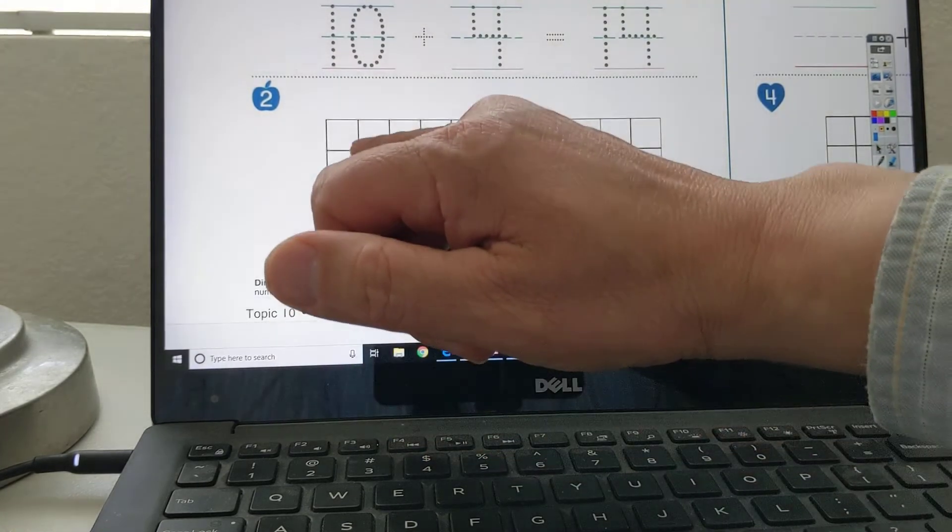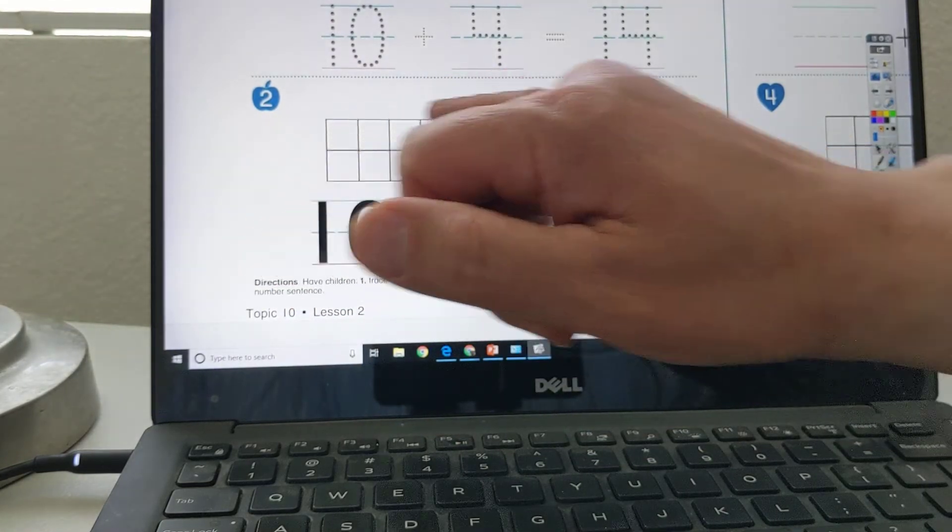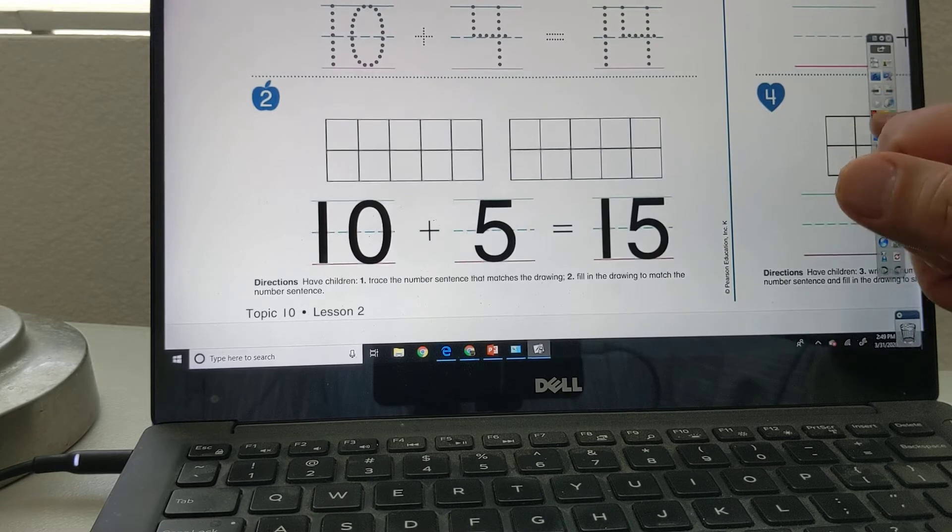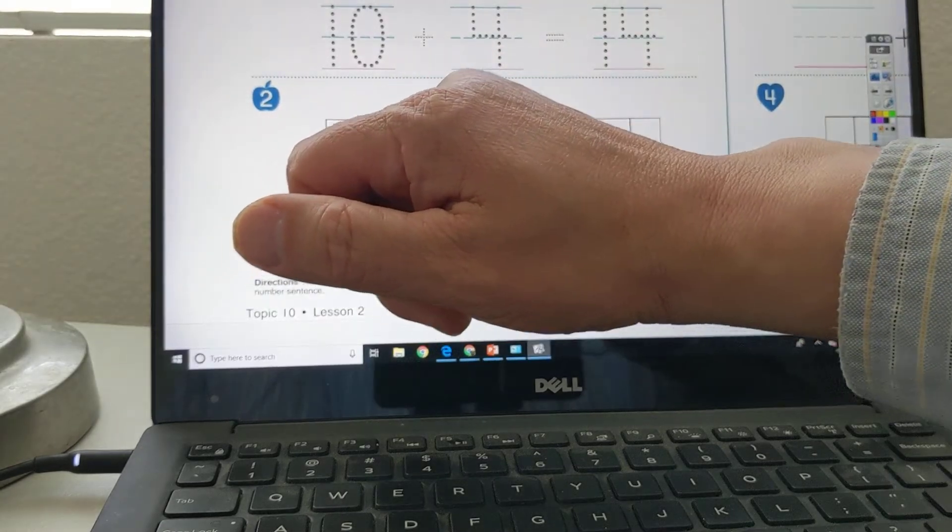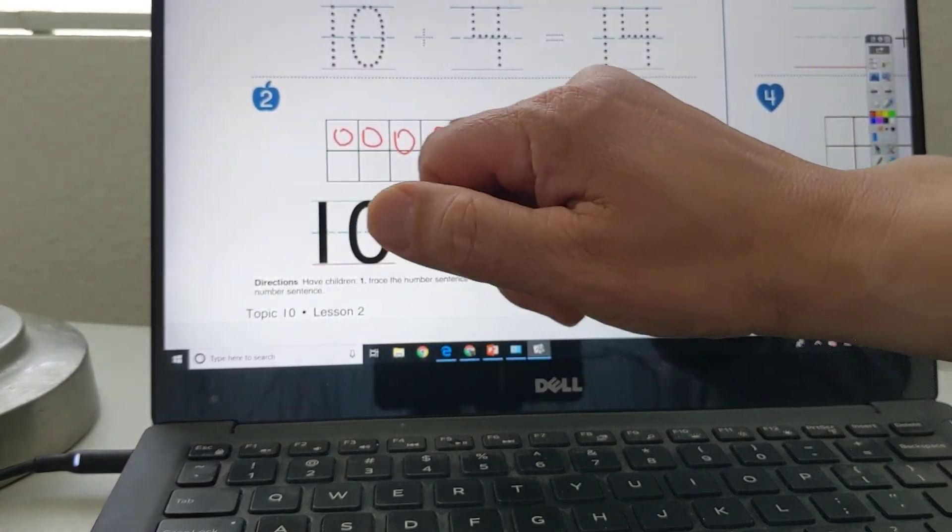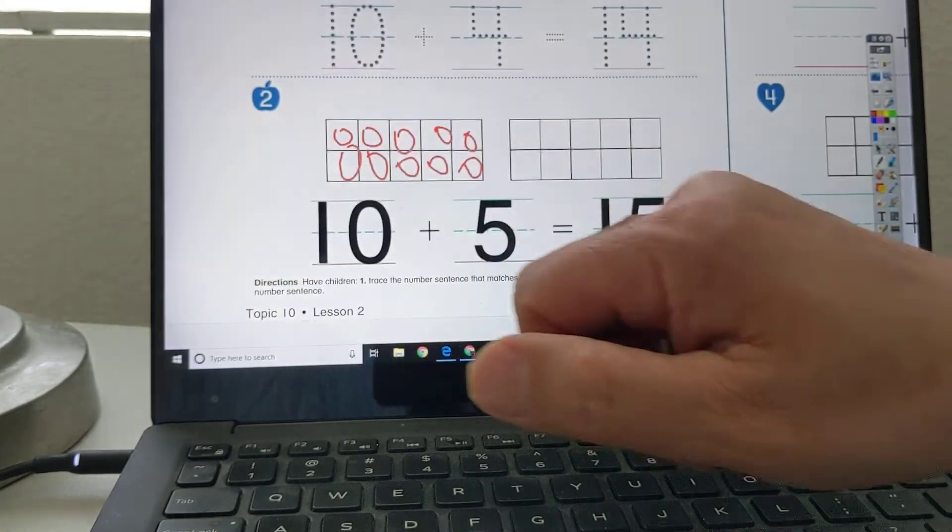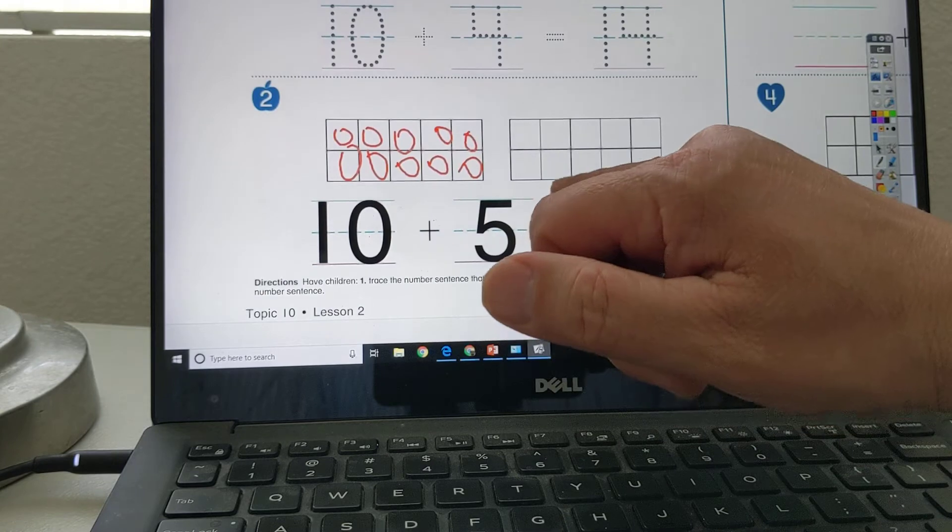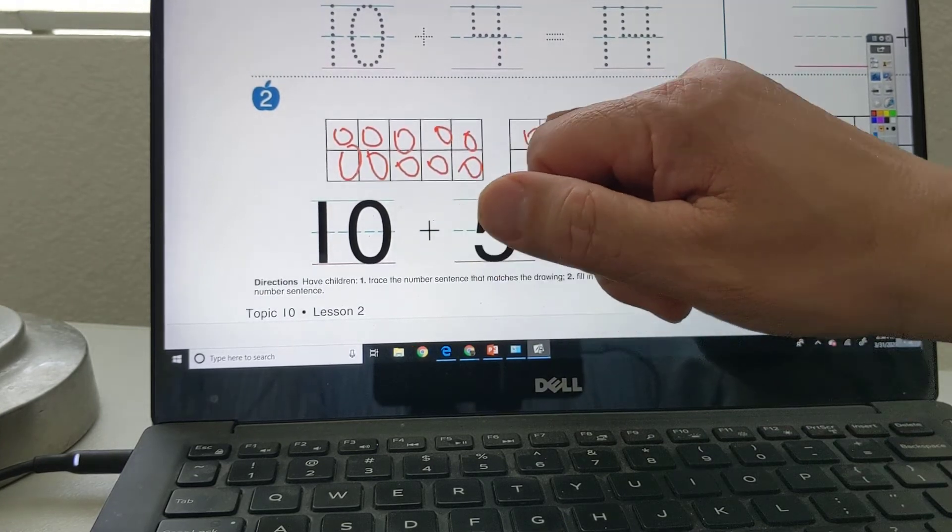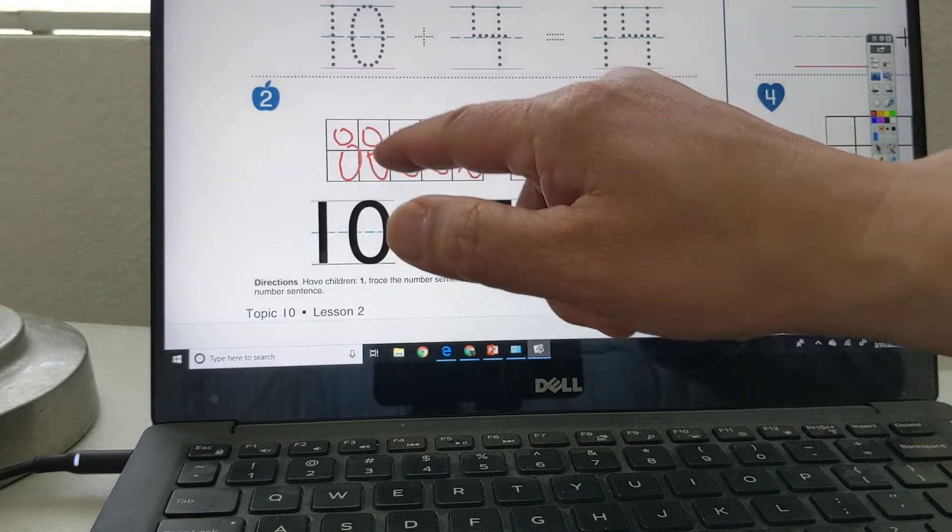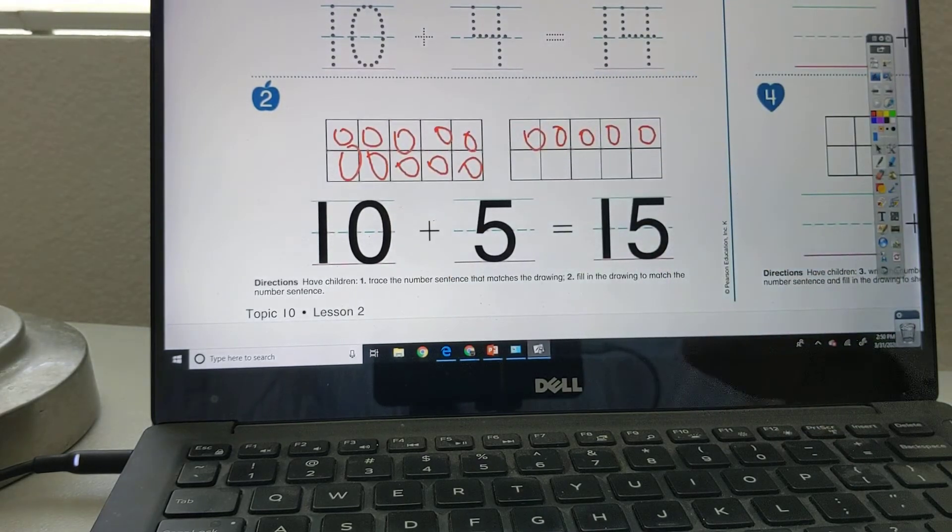So there's 10 here. So you could change it. I'm going to change it a little bit. Change the color. 1, 2, 3, 4, 5, 6, 7, 8, 9, 10. Plus 5. 1, 2, 3, 4, 5 equals 15. 10 plus 5 is 15.